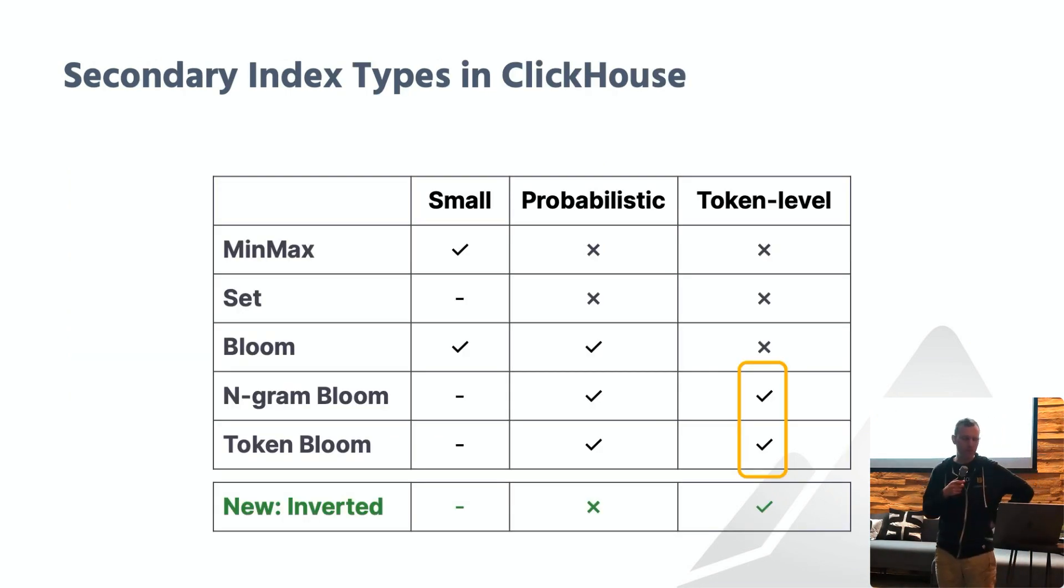ClickHouse provides you with a bunch of different secondary index types to choose from. As of today, you could use a min-max, a set, a bloom, an engram bloom, or a token bloom index. All of these index types have different trade-offs. But for our use case, what we require here is a so-called token level index. A token level index is an index which associates the tokens within a document with the documents that contain this token.